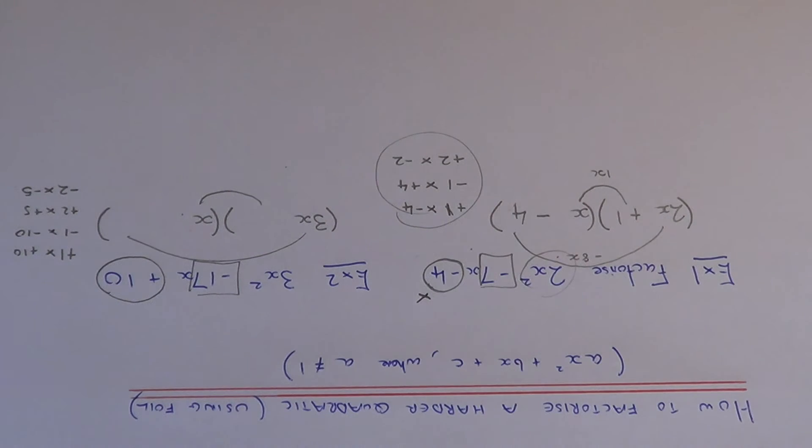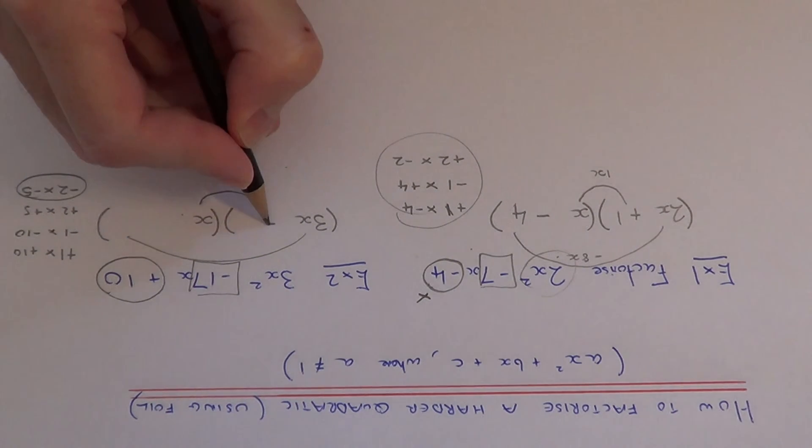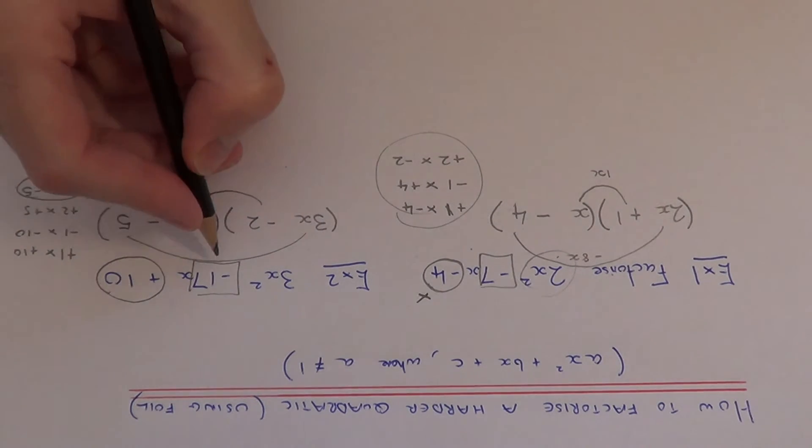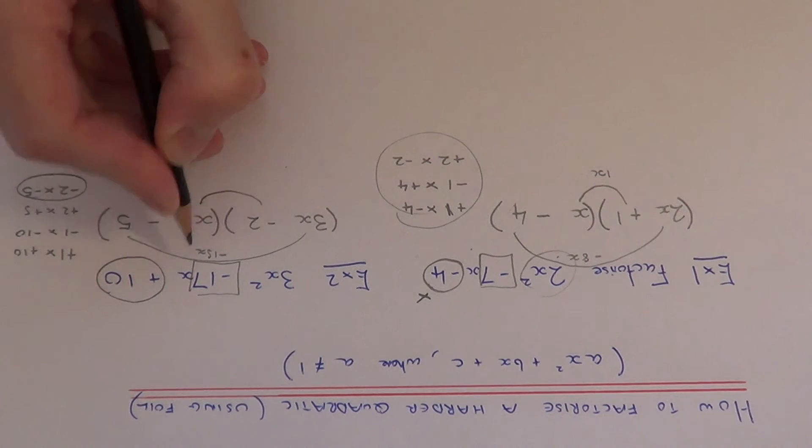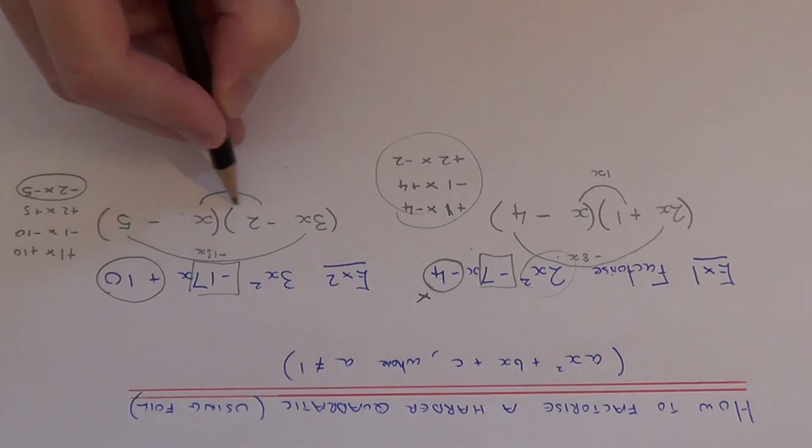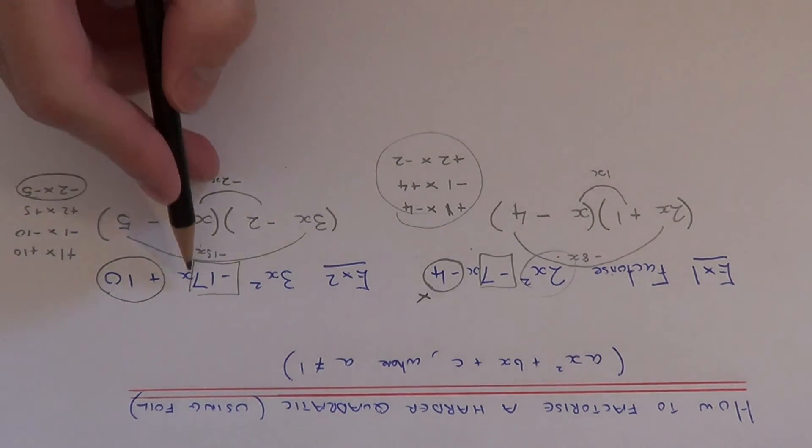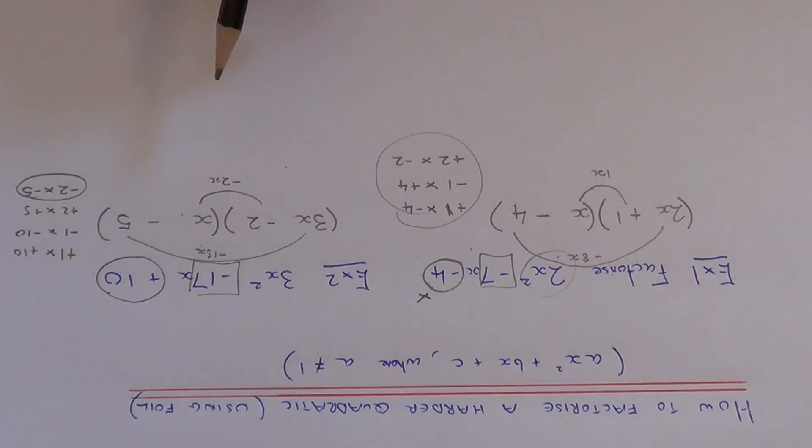The pair that we need this time will be the bottom one. That's because 3x times minus 5 is minus 15x, and the inner terms minus 2 times x is minus 2x, and minus 15x take away 2x is minus 17x. So this is the correct pair.